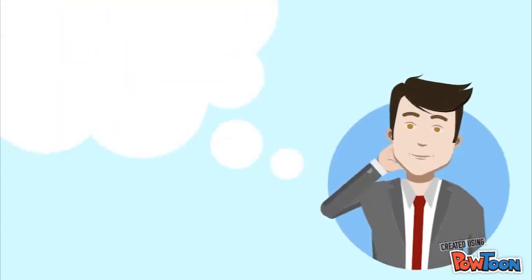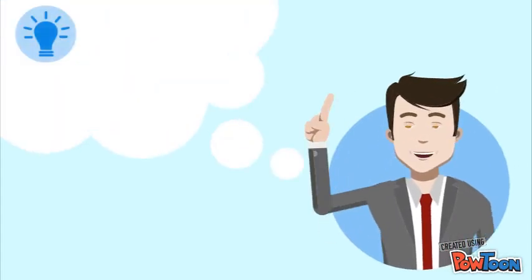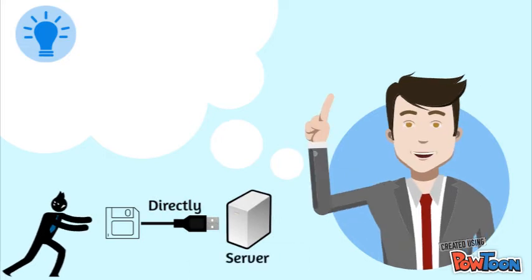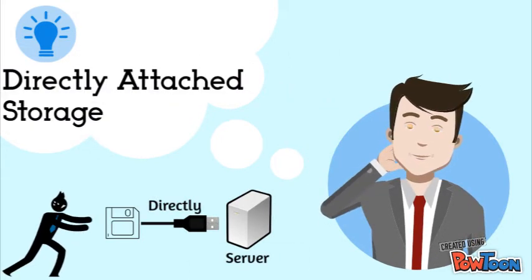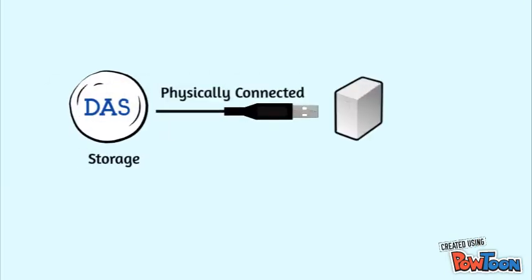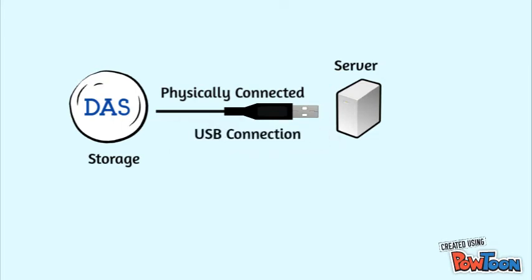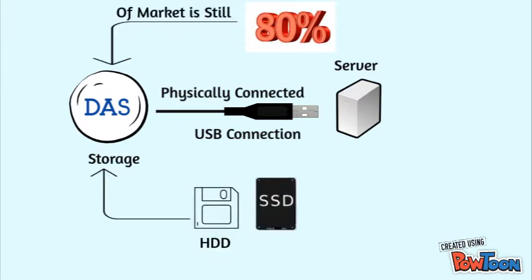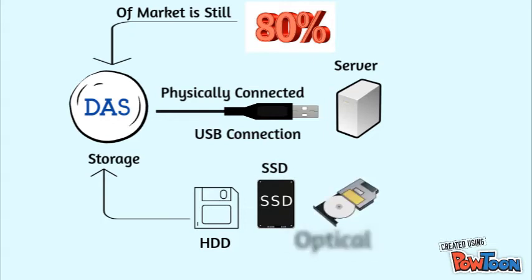With the passage of time, they came up with a solution to attach storage directly to the servers, which today we call DAS — directly attached storage. DAS is the storage that is physically connected to the box, and the medium through which it is connected can be iSCSI connection, USB, etc. 80% of the market is still DAS. Examples of DAS are hard disks, solid state drives, optical disk drives, and storage on external drives.